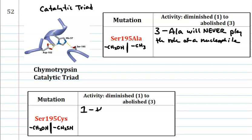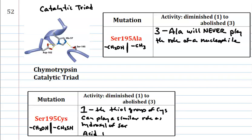The thiol group of cysteine can play a similar role as hydroxyl of serine. And in this case, what are those roles? Acid plus nucleophile is what we identified.